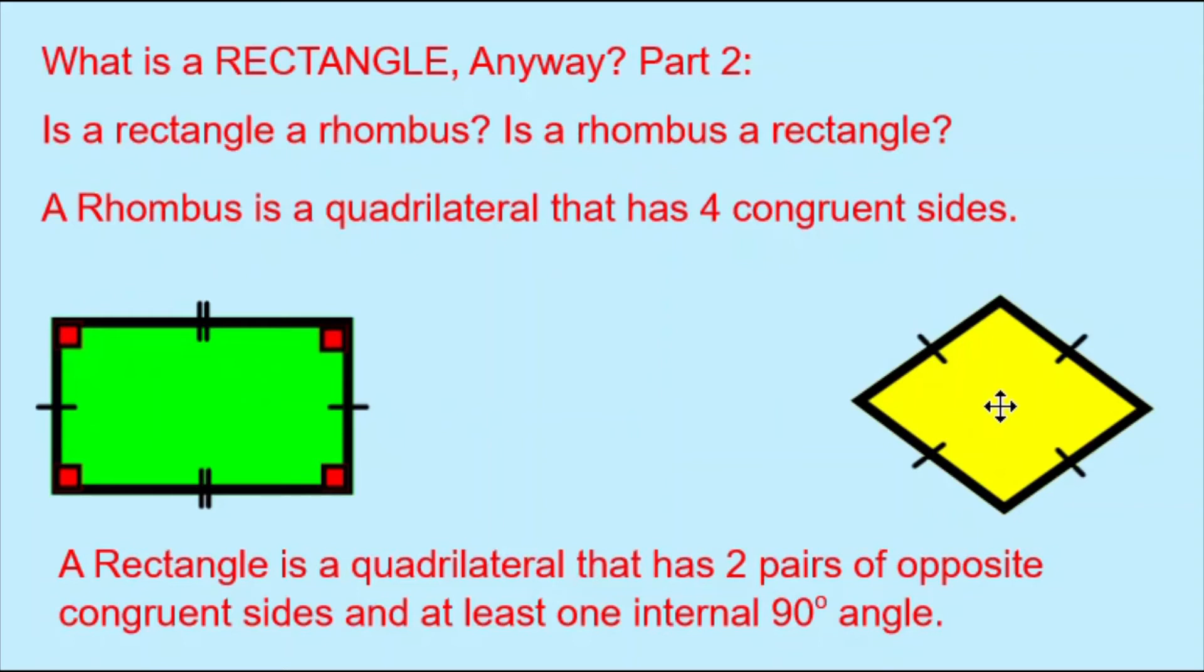Although it has four congruent sides, we can still say it has two pairs of opposite congruent sides, so the rhombus is following that part of the rectangle's rule. But a rectangle has to have at least one internal 90-degree angle. This yellow rhombus does not have any internal 90-degree angles, so this yellow rhombus is not also a rectangle. But can a rhombus also be a rectangle? Yes, because a square is a rhombus, and a square does have internal 90-degree angles.